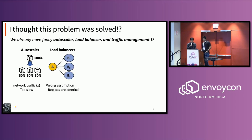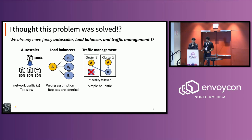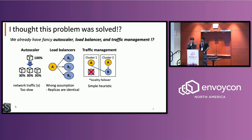Load balancers make the wrong assumption that replicas are identical. They do not consider cost, do not consider multi-hop, and so on. How about traffic management? Service meshes like Istio provide their own traffic management schemes like locality failover — for example, if one service fails in one cluster, a request will be routed to another cluster. However, this is a simple heuristic and is not optimal.